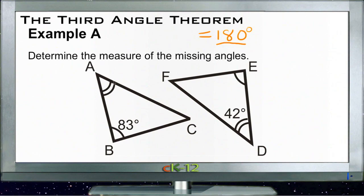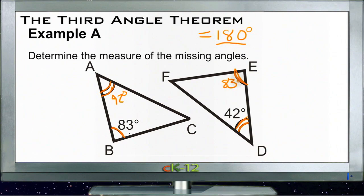Looking at our two triangles ABC and DEF: angle A is congruent to angle D, which means angle A must also be 42 degrees, just like angle D. And angle B is congruent to angle E, which tells us that angle E must also be 83 degrees, just like angle B.